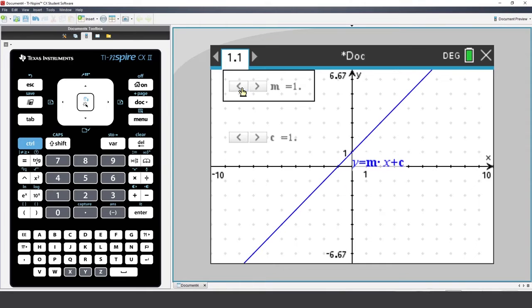Notice that as the value of m is changed, the gradient or slope of the line changes accordingly.